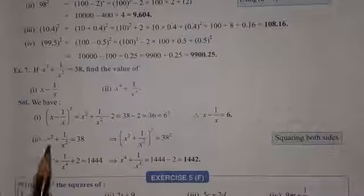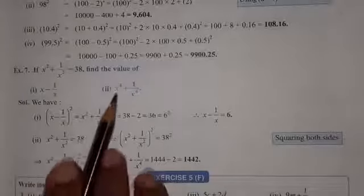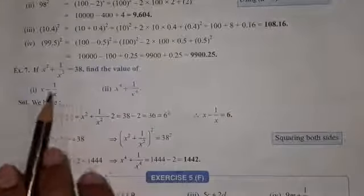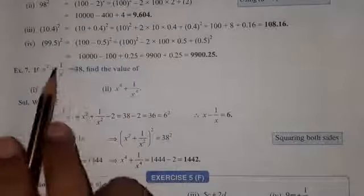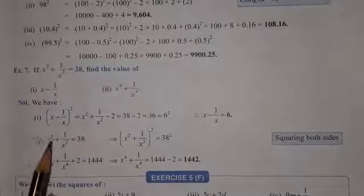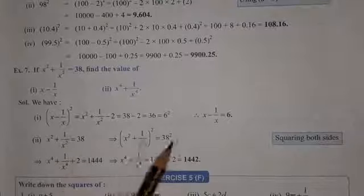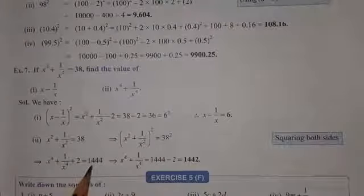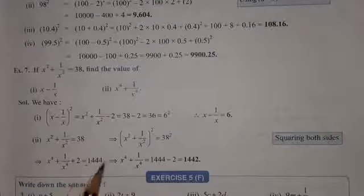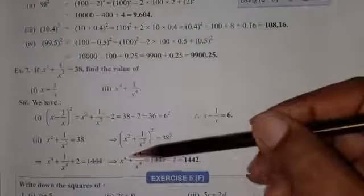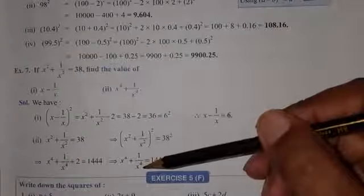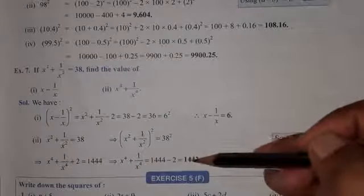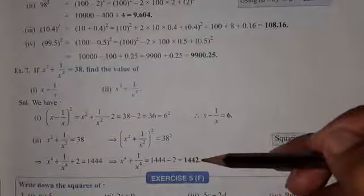Second number is similar — x to the power 4 is given. So from the value we have, we square both sides again to reach power 4. After squaring both sides and subtracting 2, we get the final value: x to the power 4 plus 1 upon x to the power 4 is equivalent to 1442.